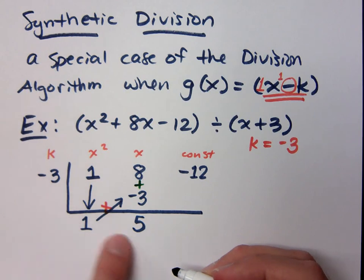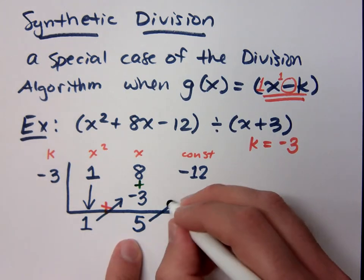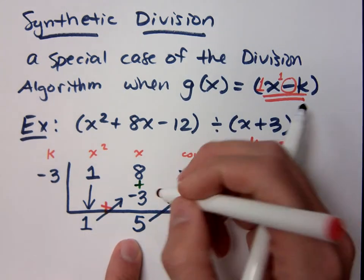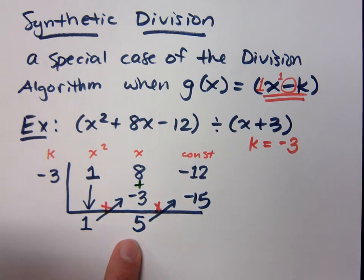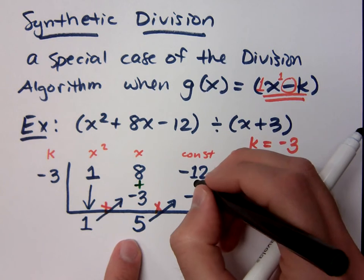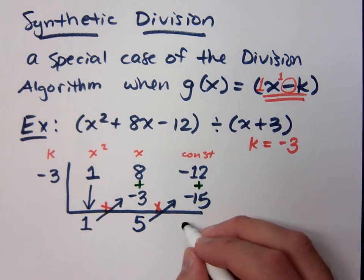Now, do it again. I want you to multiply. So, when I multiply, I get negative 15. And then, I'm going to add these guys. So, what do you get? Negative 27.